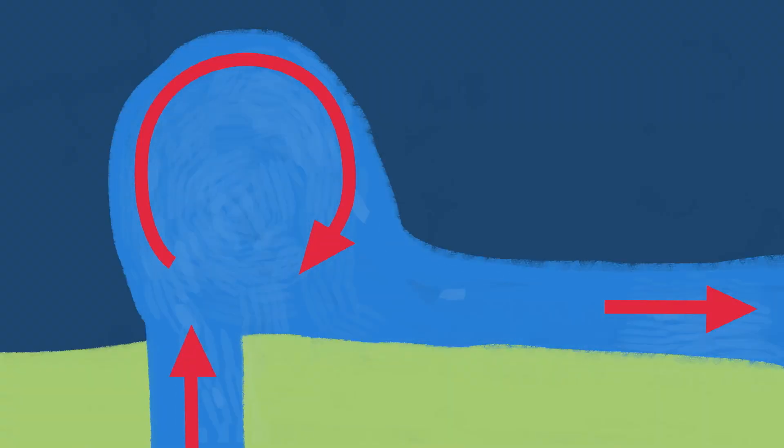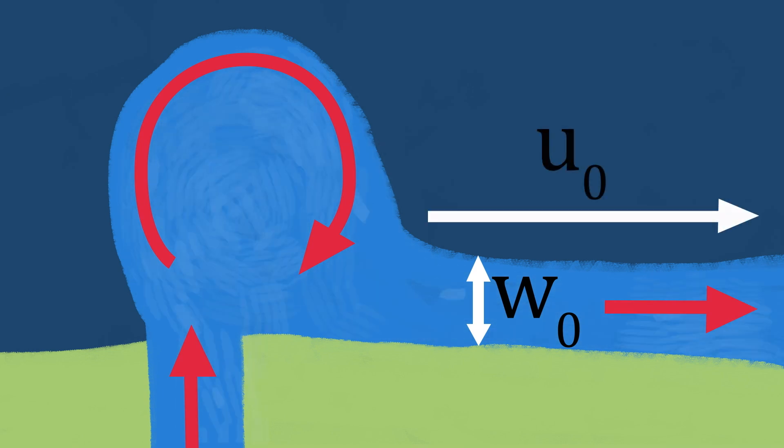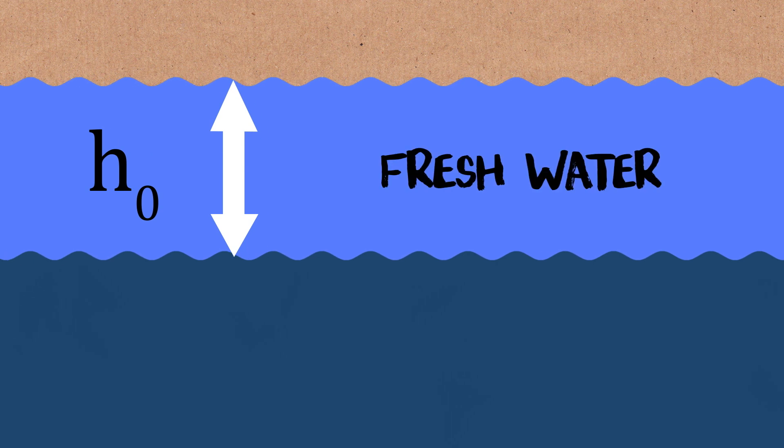So what we want to know is, we want to know its width, I'm going to call it W naught. We want to know how fast it's going, velocity U naught, and we want to know how deep it is, I'm going to call that H naught. If we're looking at it from the side on, you've got your river surface with the waves, then you've got your current here, which is going to be your fresh water, your river, and then below it you've got your sea, your salt water.